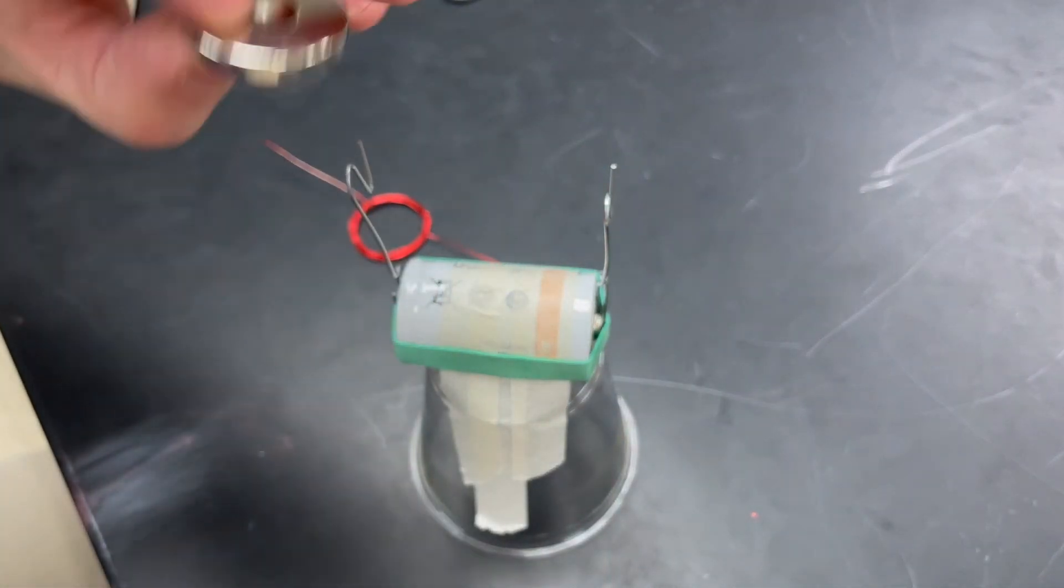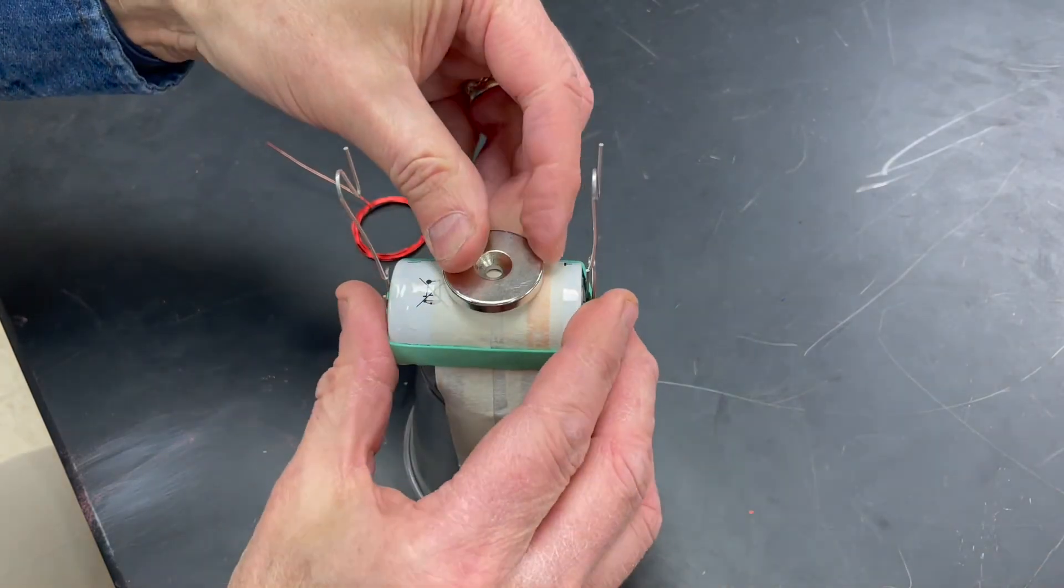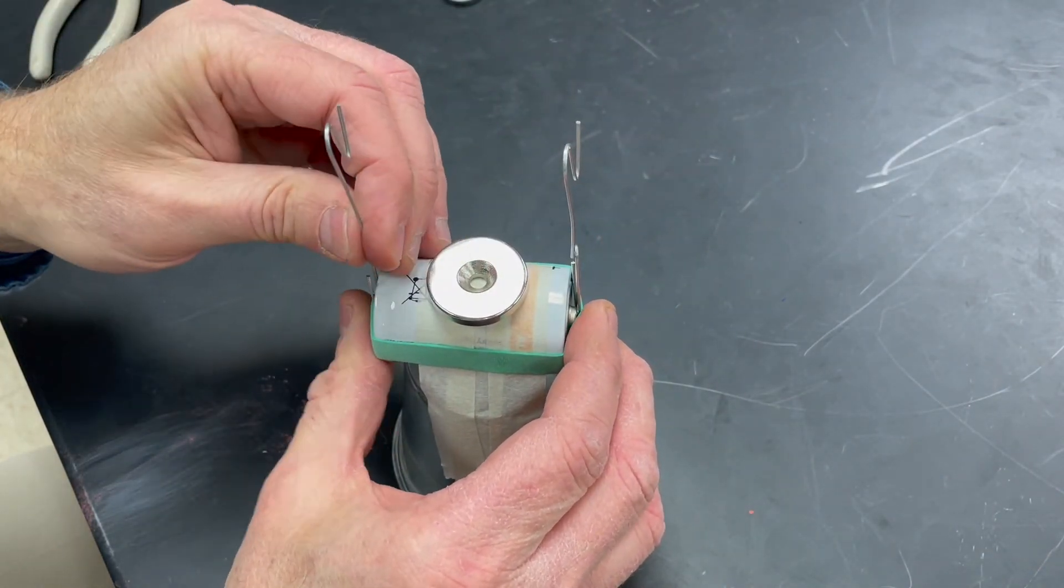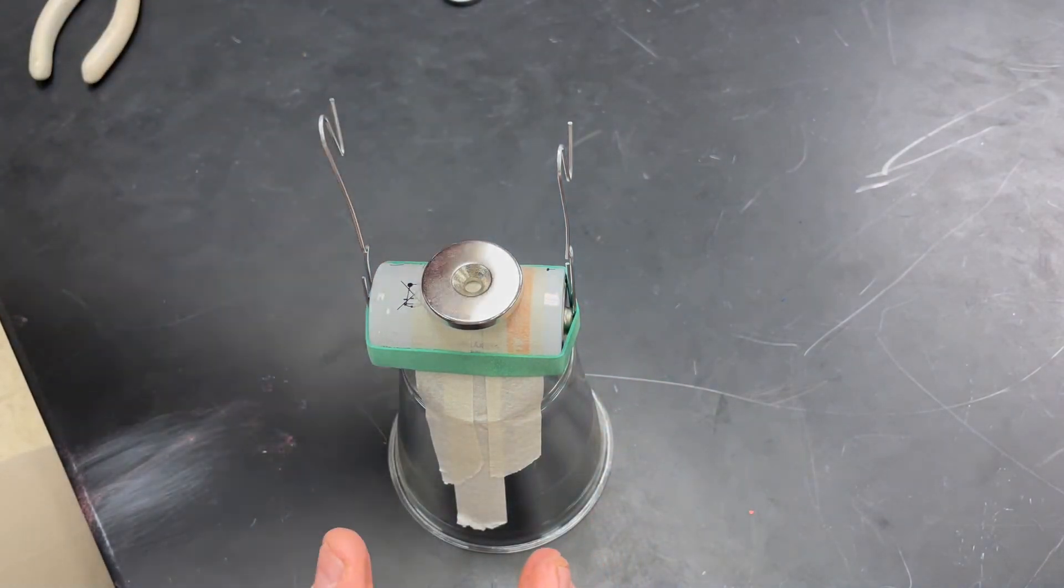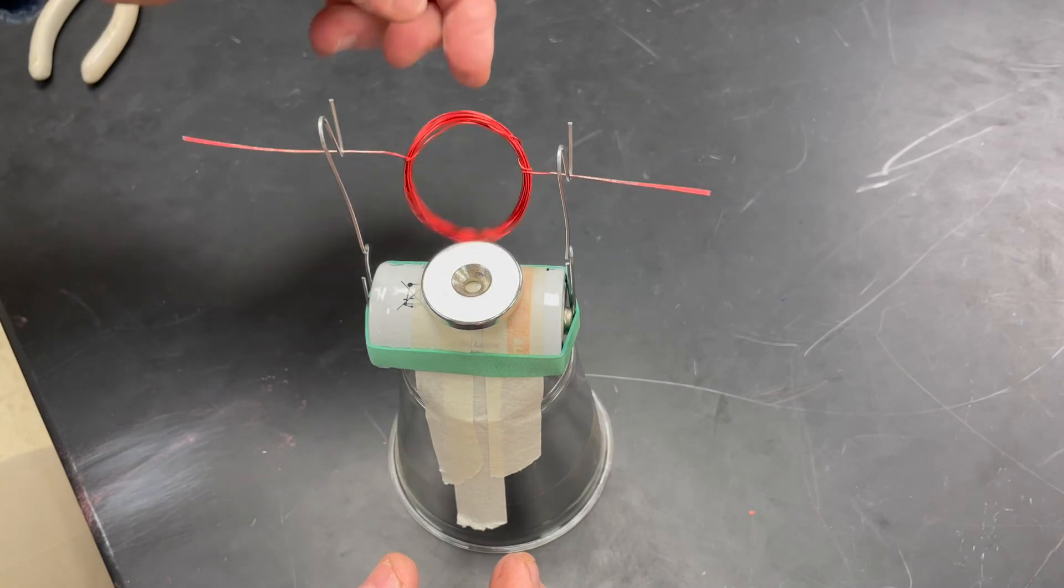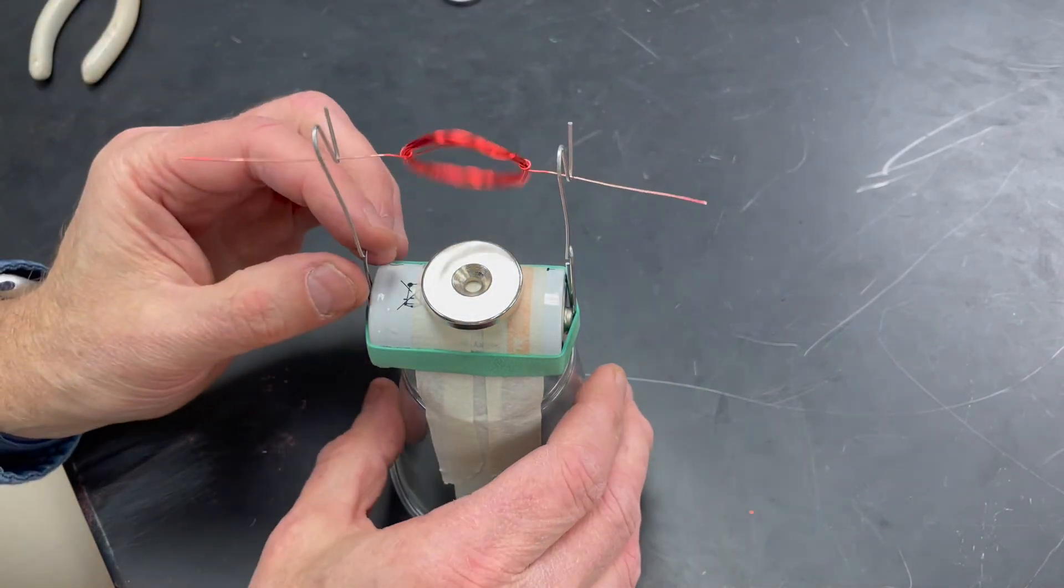Let's try changing the magnet to a strong neodymium magnet. This time I'll have to raise up the hooks a little bit because this magnet is so powerful. Once we get it adjusted correctly, it should spin quite rapidly.